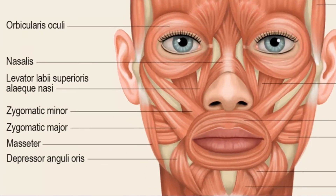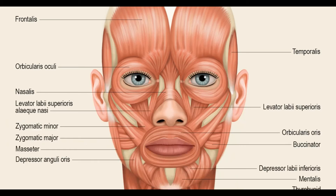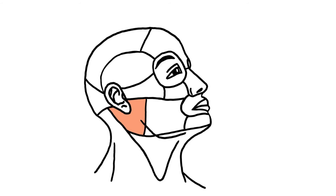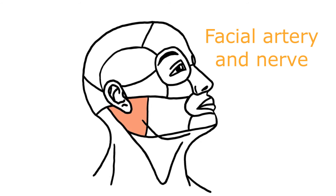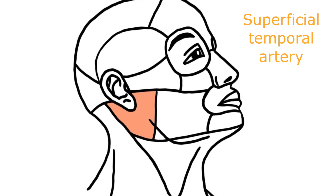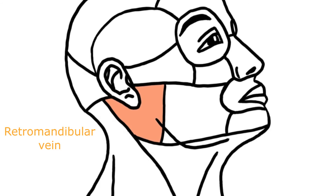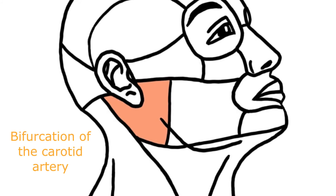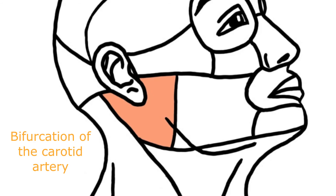Once again, you've got the masseter muscle, the parotideo-masseteric fascia, the facial artery and nerve, the superficial temporal artery, the retromandibular vein, and the bifurcation of the carotid artery.